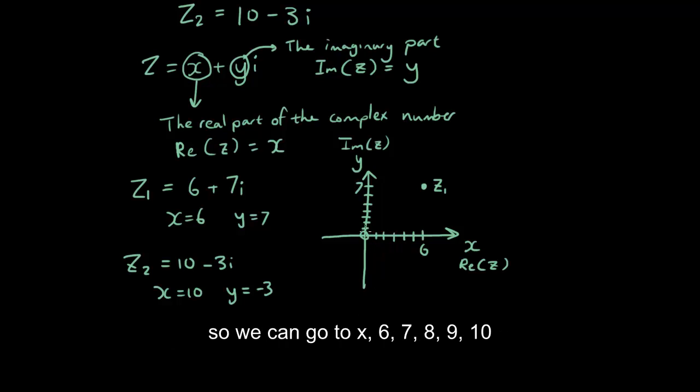So, we can go to x equals 6, 7, 8, 9, 10, y equals negative 3, negative 1, negative 2, negative 3. So, here would be our dot for, let me just rub this part out so it's easier to see, z2 which is represented by this dot.